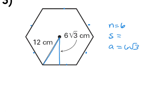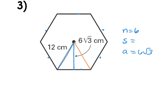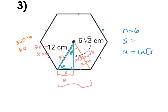To find the missing side, you can use the Pythagorean theorem or special right triangles. The central angle is 360 divided by 6, which is 60 degrees. Cut that in half to get a right triangle — the angle at the top is 30, the right angle is 90, and the bottom angle is 60. Opposite the 30 is x, opposite the 60 is x√3, and opposite the 90 is 2x. If x√3 equals 6√3, then x is 6, and 2x is 12 — which confirms the radius. Half the side length is 6, so the full side length is 12.